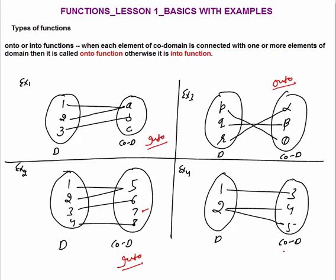Fourth example: although each element of the co-domain is connected with some element of the domain, be very careful — first you need to check whether the given graph is a function or not. This is not a function, because by the basic definition of function, each and every input should have a single output. Here, input 2 has 2 outputs, 4 and 5. So this is not a function. Forget about into or onto — first check whether the given graph is a function. Onto function simply means that each and every element of the co-domain must be connected with some element.